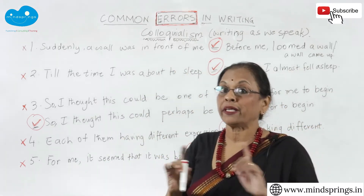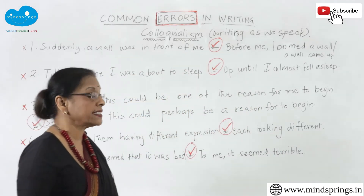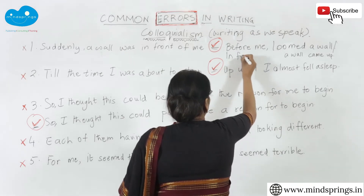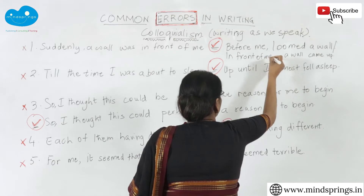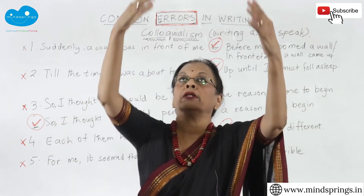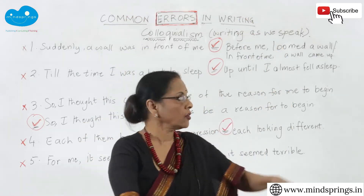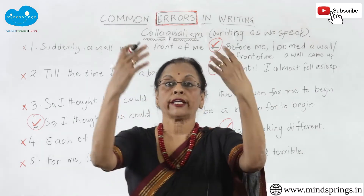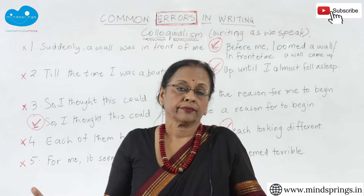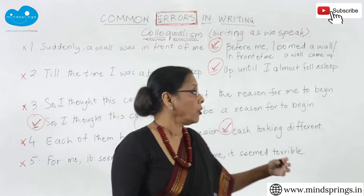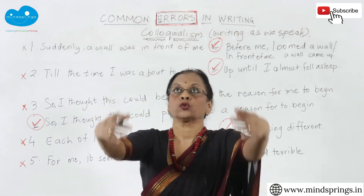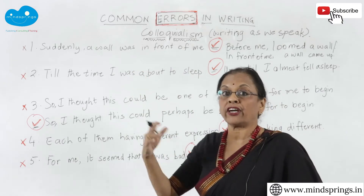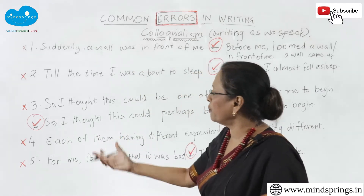So 'in front of me' and 'at the back of me' — you should stop using those constructions. Instead, you'd say 'before me,' or 'in front of me loomed' — 'loomed' is a nice word. If there's a wall coming up in front of you, you can say 'a wall loomed' or 'a wall suddenly came up.' So in an adventure story: 'in front of me loomed a wall' or 'in front of me a wall suddenly came up.' Stop saying 'this was in front of me' — start with 'in front of me' and you will be fine.